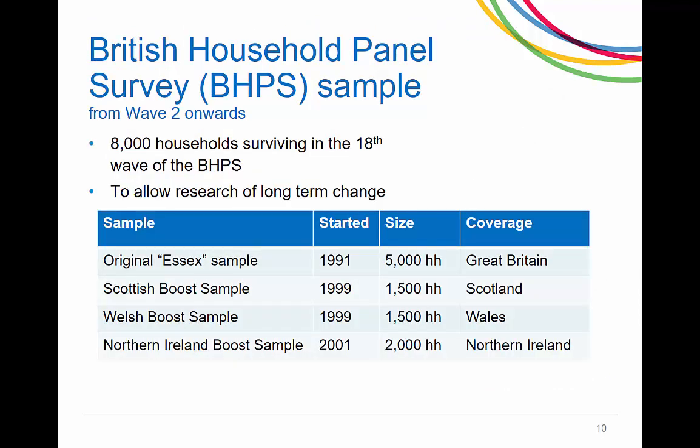The British Household Panel Survey is another household panel survey which started in 1991 and continued until 2008. It was decided to include respondents from this survey who were still active in 2008 into Understanding Society to allow research of long-term change. The BHPS sample comprises four samples. All of these had a clustered and stratified design except for the Northern Ireland Boost sample, which was a simple random sample. Addresses in the Scottish, Welsh and Northern Ireland Boost samples had a higher selection probability than addresses in the original sample.